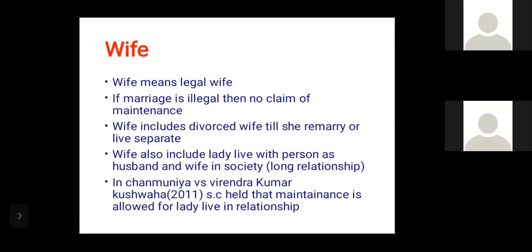Section 125 is broken into parts: wife, children, and parents. 'Wife' means a legal wife — if the marriage is illegal, there is no claim for maintenance. A legal wife can claim maintenance until she remarries or lives separately. Importantly, the definition of wife also includes a lady living with a person as husband and wife in society for a long relationship — i.e., a live-in relationship.